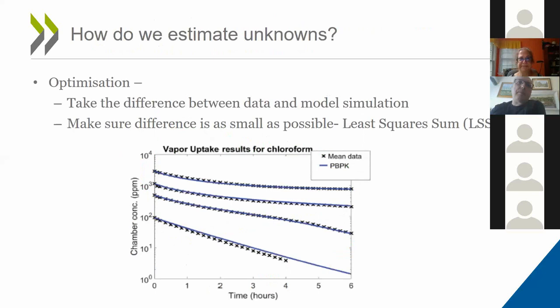Here I'm showing an example from optimization — how we get parameter estimates from the data. It is a combination of experimental data and PBK modeling, performed with algorithms that look at regression and the difference between the experimental data and the simulation at each time point. When this difference becomes the smallest possible value, the algorithm stops and gives us the answer for the parameters we're looking for.